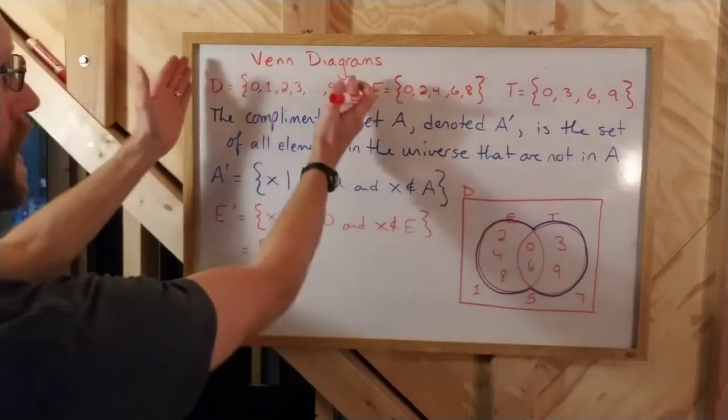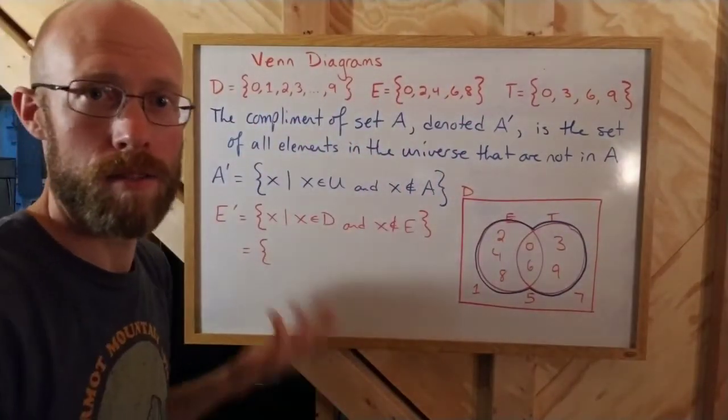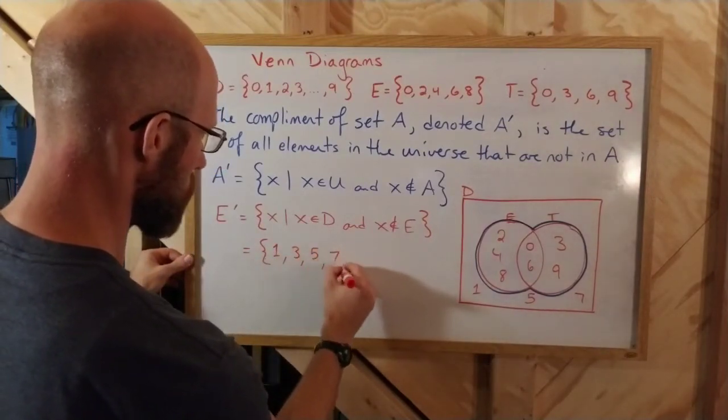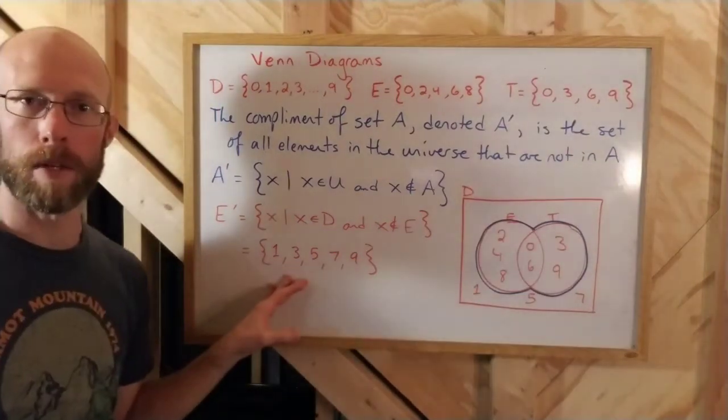So if I look at D and just exclude all the evens, that must give me all the odds. So that'd be 1, 3, 5, 7, and 9. That would be the complement of E.